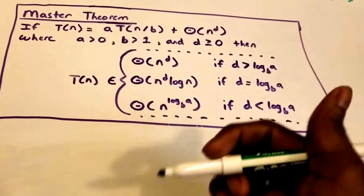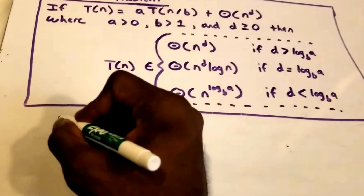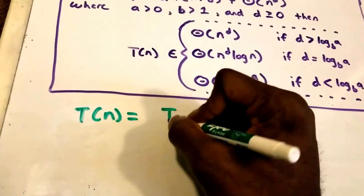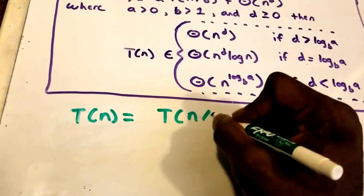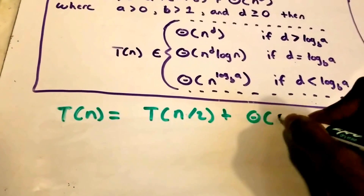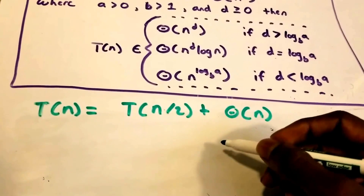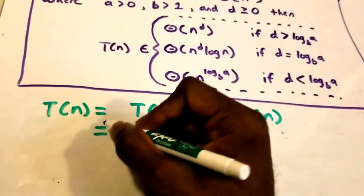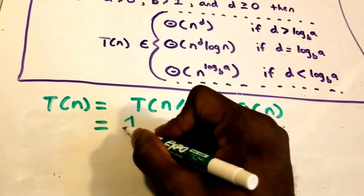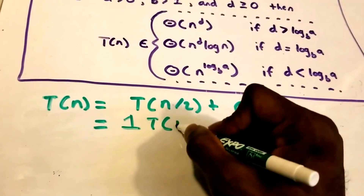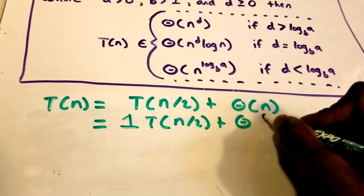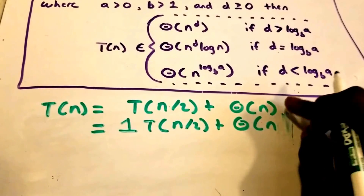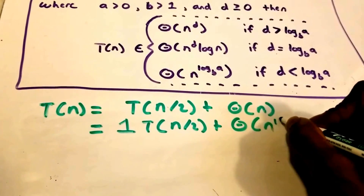First, let's rewrite our equation. We have T(n) = T(n/2) + Θ(n). Let's rewrite this to match the form in the master theorem: this is equal to 1·T(n/2) + Θ(n^1).